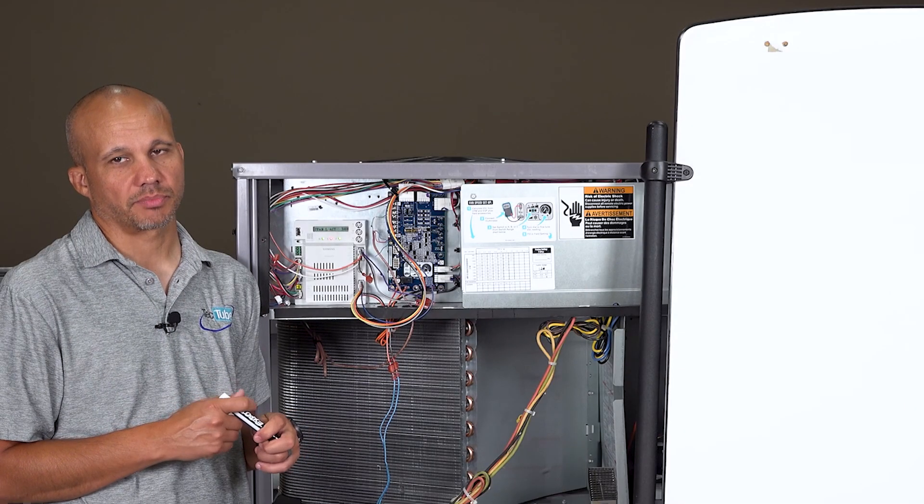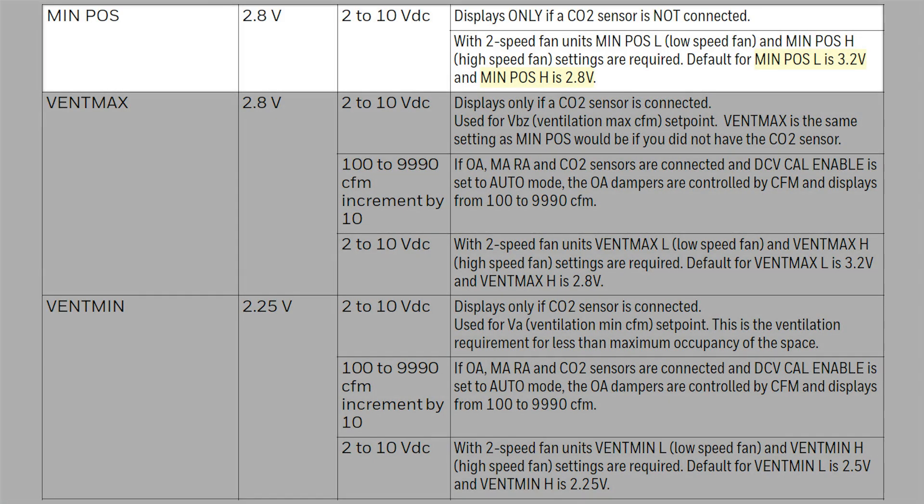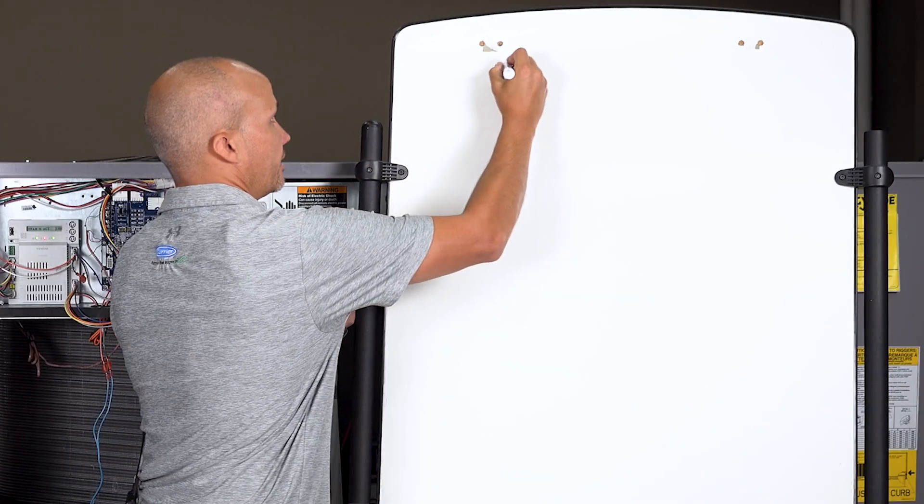I want to finish up something on the basic setup screens that is a little more confusing and more advanced. We have the fan low actuator position for minimum ventilation and the fan high actuator position for minimum ventilation. The hard part is that all of these minimum positions are not in CFM and they're not in percent damper open - they are in voltage, and that confuses a lot of folks. Right now I'm showing you fan low actuator position 3.6 volts and the high one is 2.8 volts.